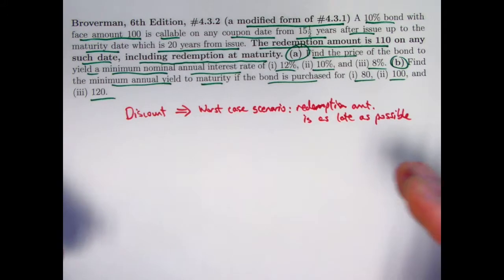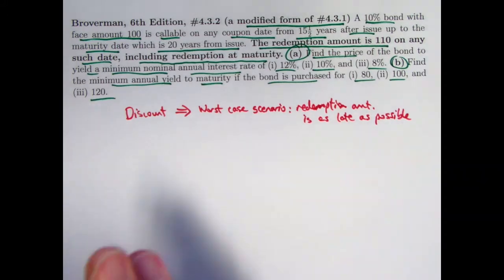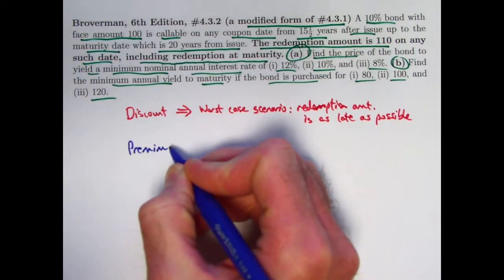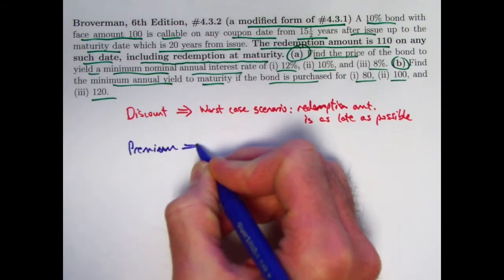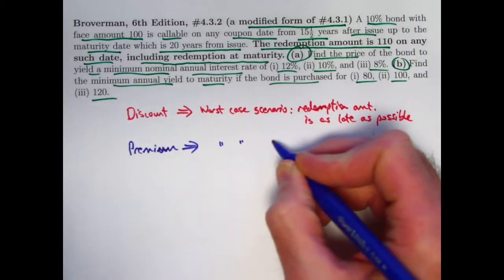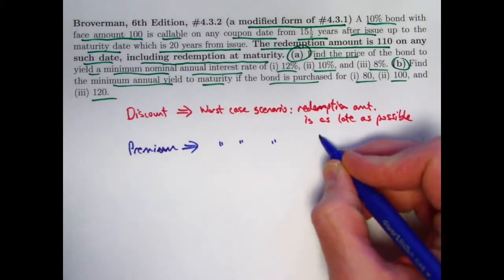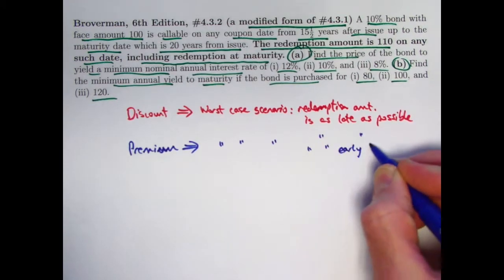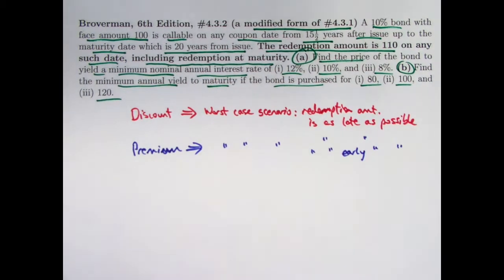In the situation where the redemption amount is the same no matter when it's redeemed. And when the bond is purchased at a premium, worst-case scenario is the redemption amount is as early as possible. And that's what you want to assume in your calculations.